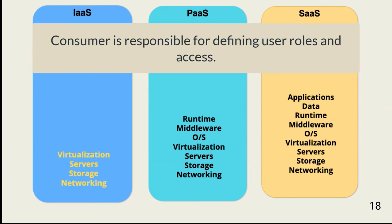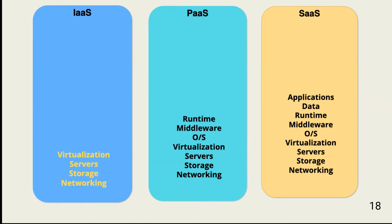The consumer is responsible for defining user roles and managing user access. IaaS, or Infrastructure as a Service, provides the basic hardware needed to deploy operating systems, databases, and applications. PaaS goes further by providing everything needed for application development and hosting. Third-party applications can also be deployed by the consumer. The CSP may provide programming interfaces, languages, libraries, and other development tools. In addition to what is provided by IaaS, PaaS also provides operating systems, middleware, and other runtime tools. SaaS adds applications and data management for those applications.